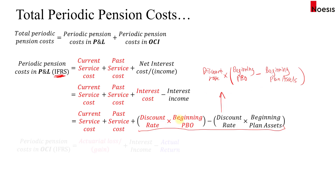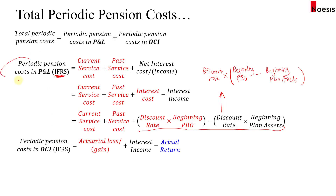The periodic pension cost in OCI can be found by subtracting the periodic pension cost in P&L from the total periodic pension cost, which gives mainly the actual loss or gain plus the interest income component minus the actual return. Summing the P&L and OCI components brings you back to the same total formula.